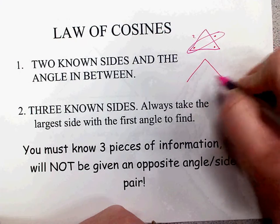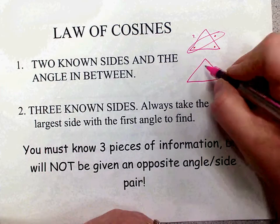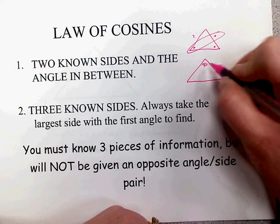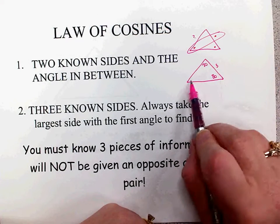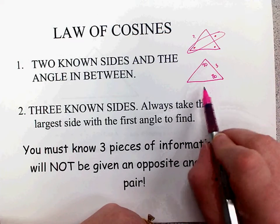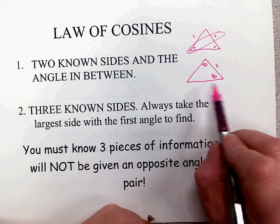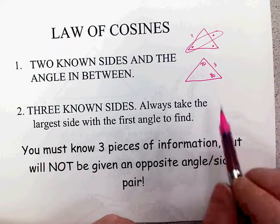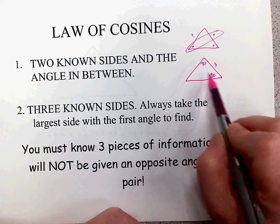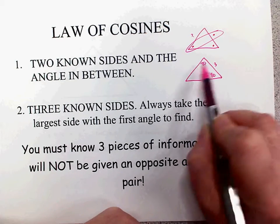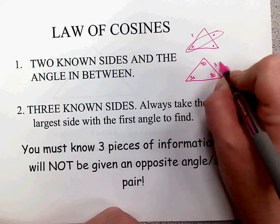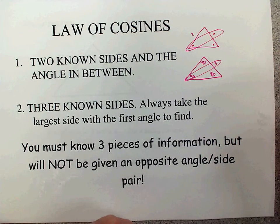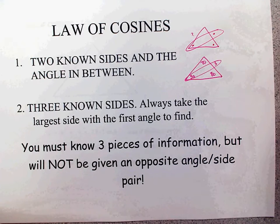Where you have to be careful about thinking you can't use the law of sines when you really can is a situation like this. You might think you don't know an opposite angle and side pair. But if you know two angles, you know the third one because they add up to 180. So 70 and 80 add up to 150, meaning this angle has to be 30 degrees — and there's your opposite angle and side pair.